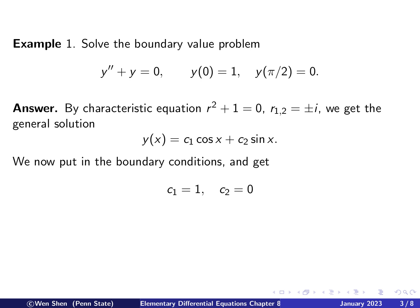Applying y(0) = 1: y(0) = c1 times 1 plus c2 times 0 = c1, so c1 = 1. Applying y(π/2) = 0: y(π/2) = c1 times 0 plus c2 times 1 = c2, so c2 = 0. Plugging back in, we find the unique solution y = cosine x.